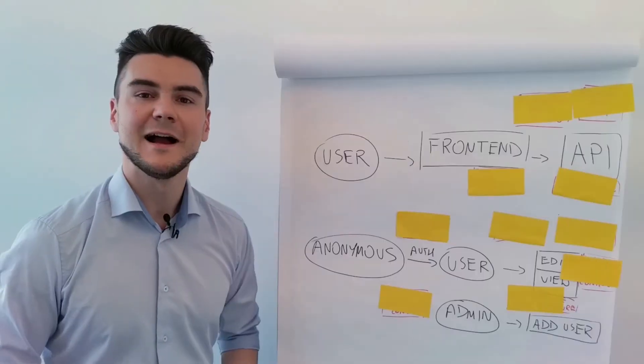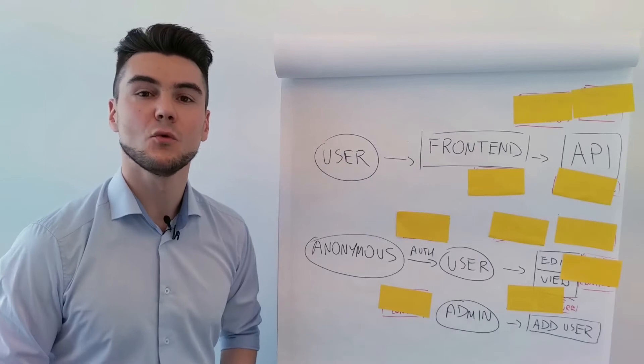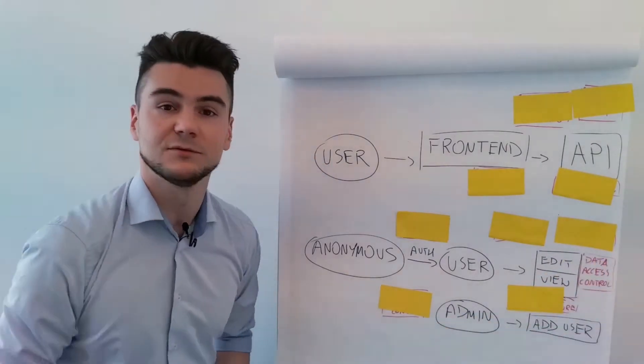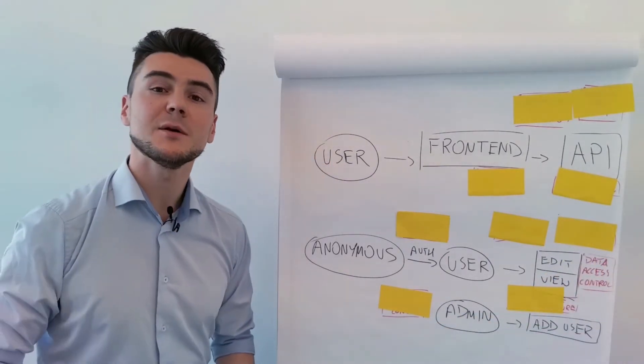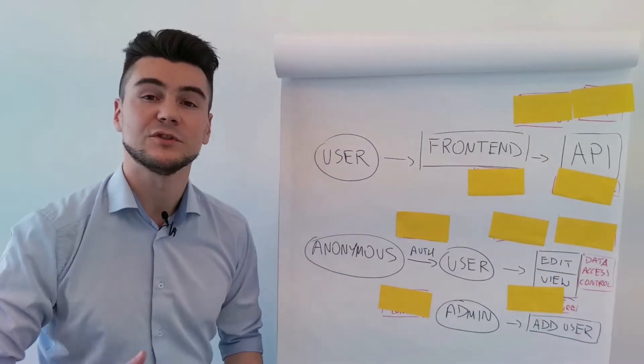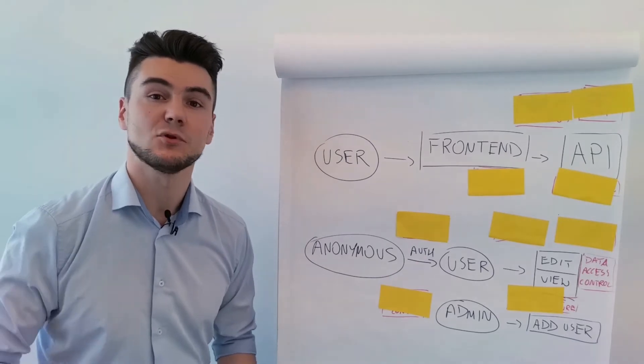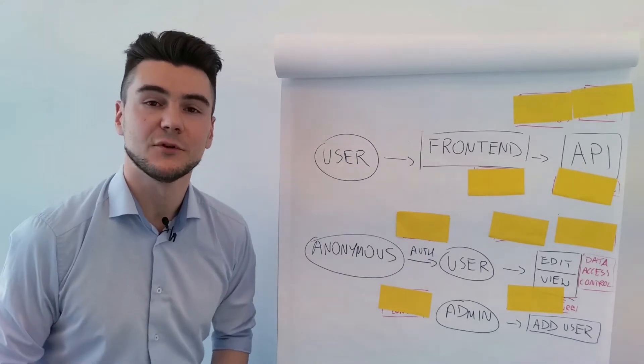What can go wrong? API issue 1: Broken Object Level Authorization. Think about viewing or editing other users' data, such as profiles or invoices.